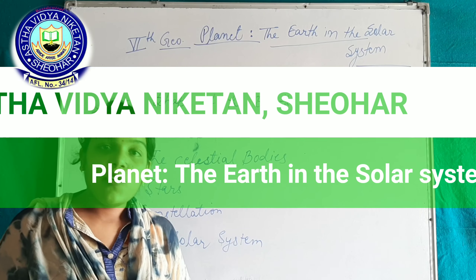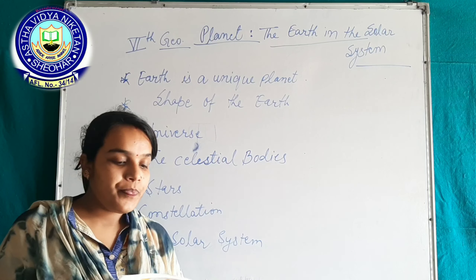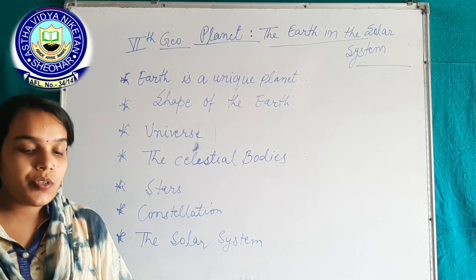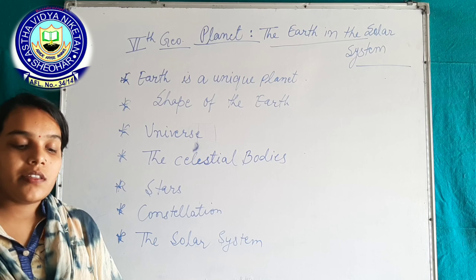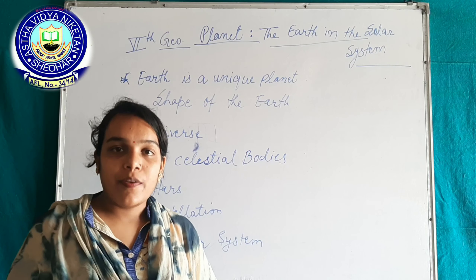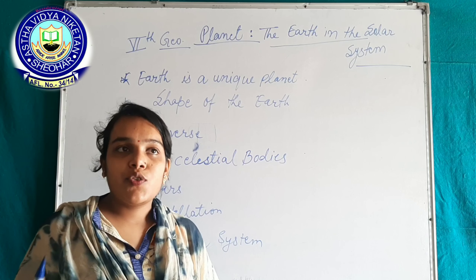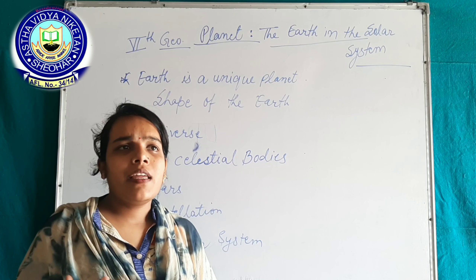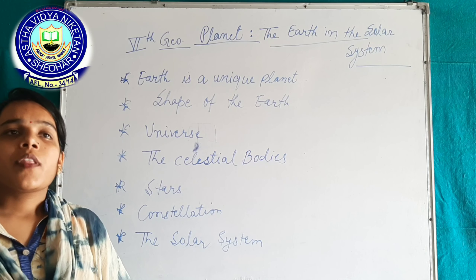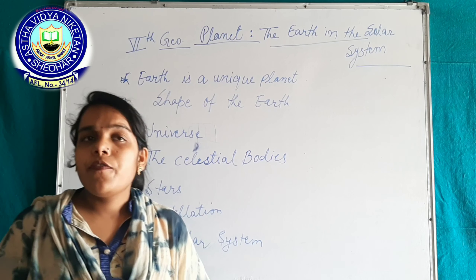Hello students, we are going to start Class 6 Geography. The first chapter is 'Planet Earth in the Solar System.' We have to study about the planets, the Earth, stars, the universe, constellations, asteroids, the moon, and many physical bodies that are in our universe. In this chapter, we will study about the whole universe and its different parts.